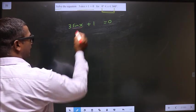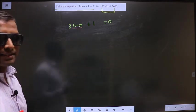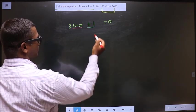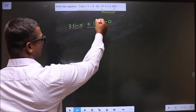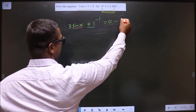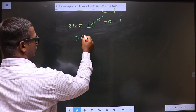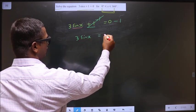First, make sin x the subject. To remove plus 1, subtract 1 from both sides. This cancels out, and we get 3 sin x equals minus 1.